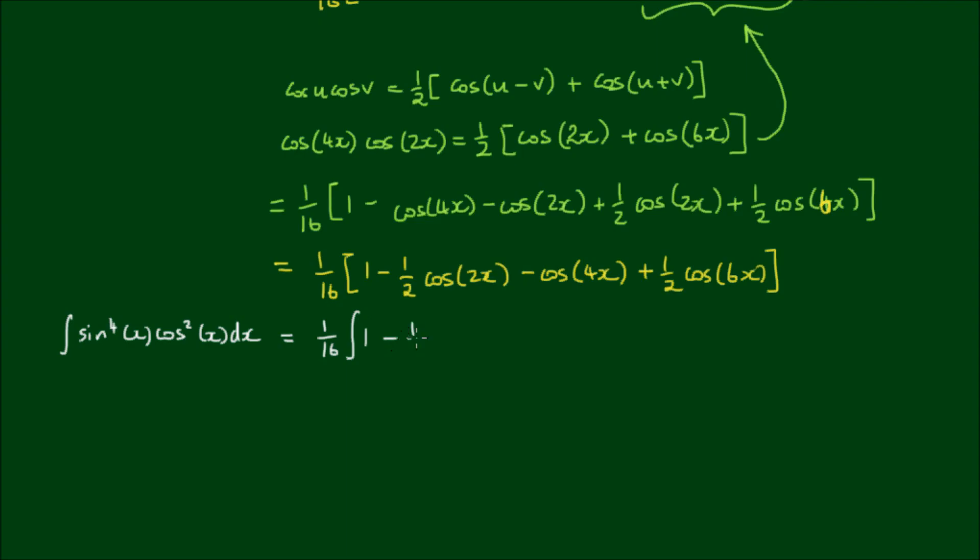So this is equal to 1 on 16 of 1 minus 1 half cos of 2x minus cos of 4x plus 1 half cos of 6x with respect to x. And the integral on the right-hand side is very easy to carry out.